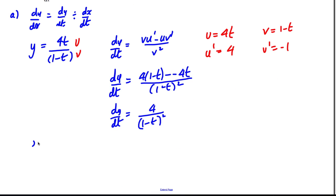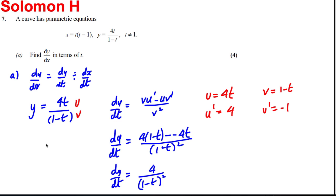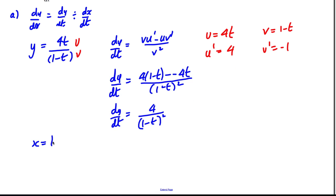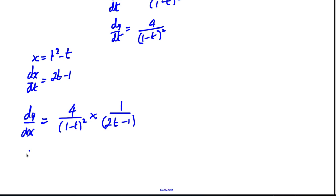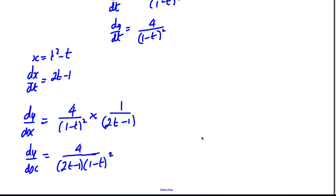Now let's find dx by dt. x equals t(t minus 1), which is easiest written as t squared minus t. So dx by dt is 2t subtract 1. Therefore dy by dx equals 4 over (1 subtract t) squared divided by (2t subtract 1), which gives dy by dx equals 4 over (2t subtract 1)(1 subtract t) squared.